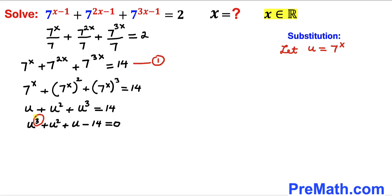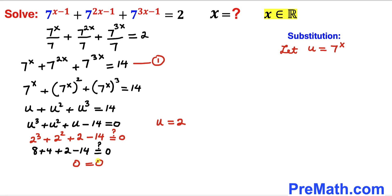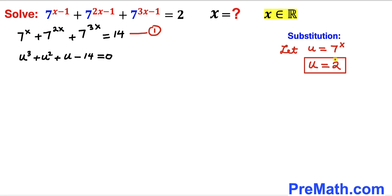Our highest degree is 3, so we have at most three solutions. If I pick u = 0 that is not going to work. Next, if I pick u = 2 and plug it in: 2³ + 2² + 2 − 14 = 8 + 4 + 2 − 14 = 0. So u = 2 is indeed one of our real solutions.